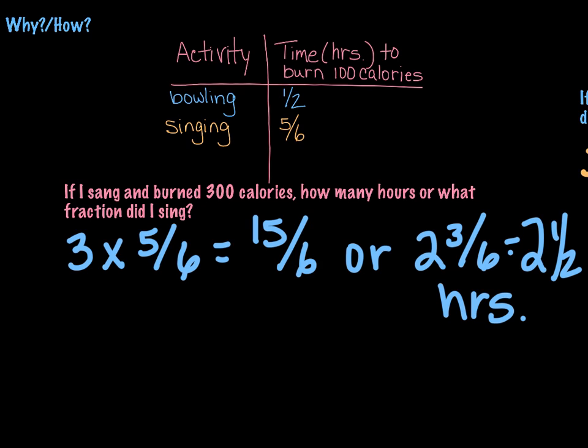Because it's 300 calories, so we'd use the three because we're burning 100 calories in five-sixths of an hour, so if we burned 300 calories, that's three one-hundredths, right? That's where I got that three.